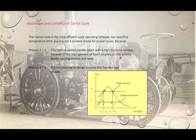The second impracticality is the process from point four to one. Point four is a mixture of liquid and vapor, and a pump cannot handle a two-phase mixture — it must be either fully liquid or fully vapor. This makes the Carnot cycle impractical, which is why it is modified into what we call the Rankine cycle.